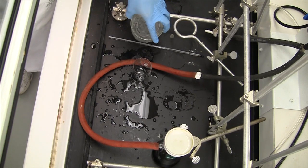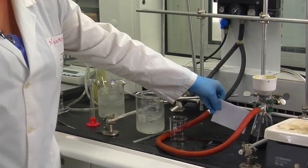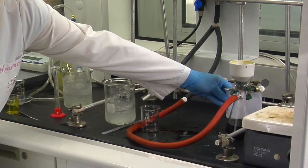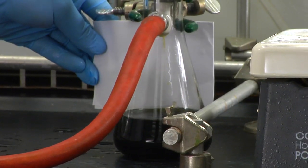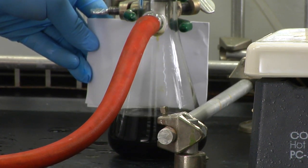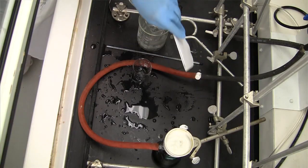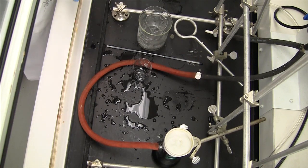You can check this by grabbing a white piece of paper and putting it behind your filter unit to see the color of the solution coming through. Right now it's still green, so we're going to need to wash with some more methanol.